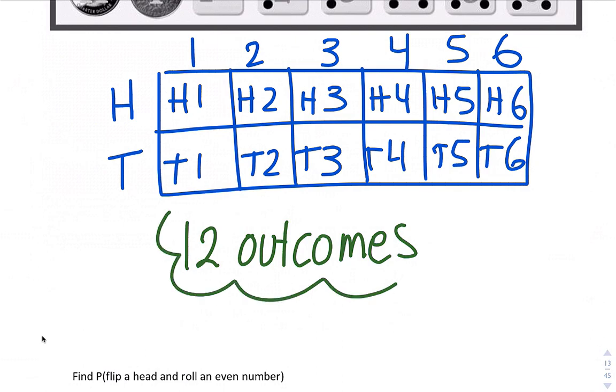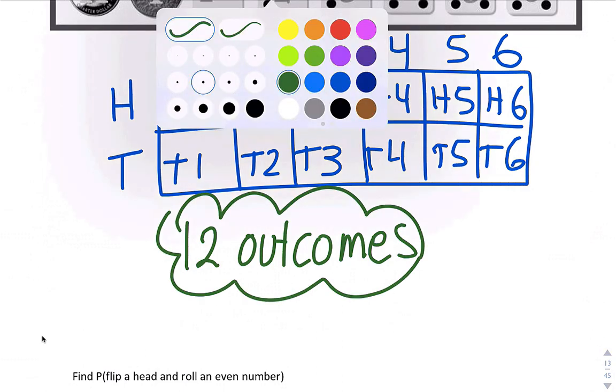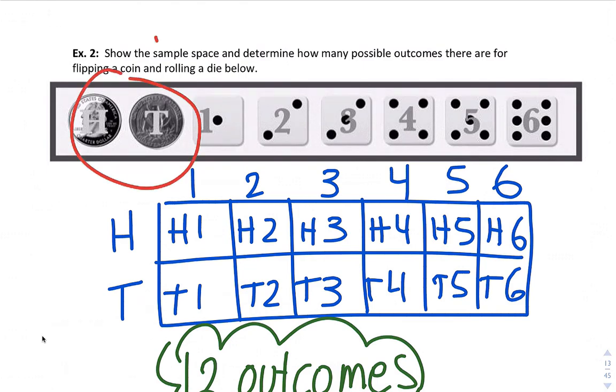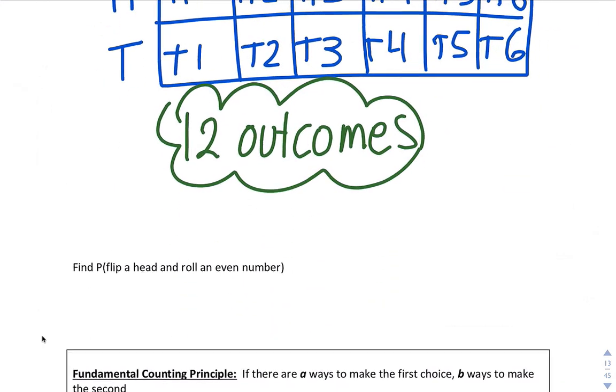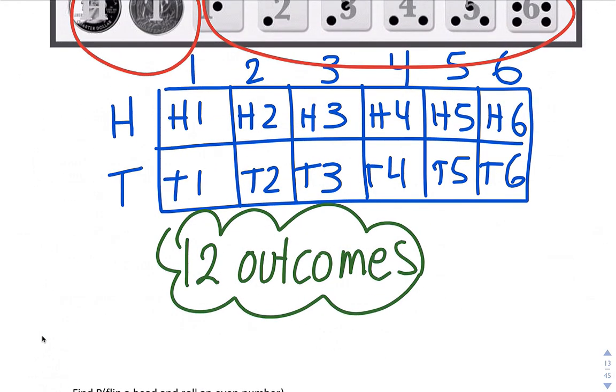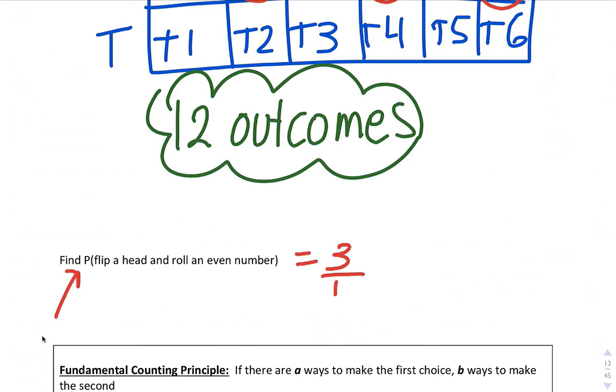Another way that we could do it is we have two coins, we have six outcomes for the dice, which is 12 as well. Next question: Find the probability that you flip a head and roll an even number. I'm going to look at my table. Heads, even number. Looks like three out of 12. We can reduce that as one-fourth. We can write that as a decimal, 0.25, or as a percent, 25% chance of getting a heads and rolling an even number.